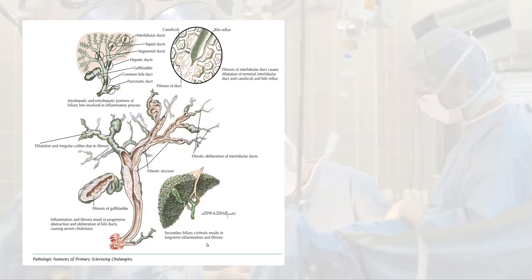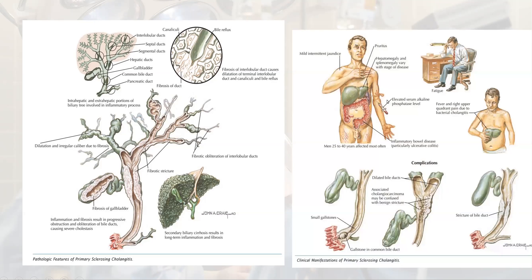The end result is liver cell failure, but this time the patient is mostly male, with hepatosplenomegaly, pruritus, mild intermittent jaundice, and may be associated with inflammatory bowel disease — especially ulcerative colitis. There are also elevated serum alkaline phosphatase levels, fever, and right upper quadrant pain.